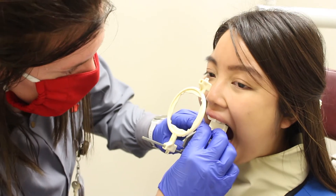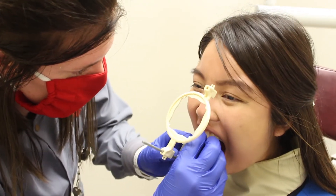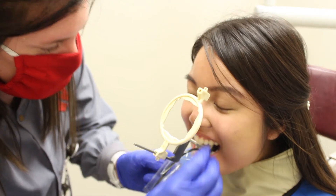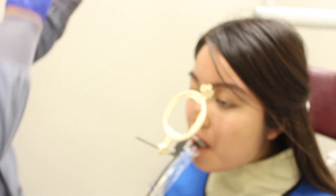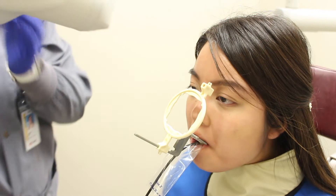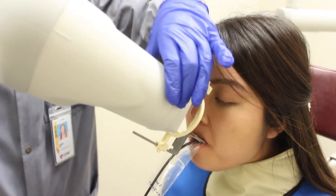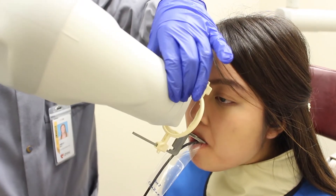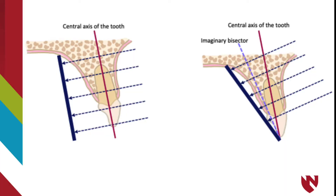When taking an anterior maxillary central periapical, or PA, place the sensor parallel to the central axis of the maxillary incisors and ask the patient to bite down firmly on the bite block. Then place the PID to the center of the aiming ring to ensure that it is parallel to the indicator arm. This is called paralleling technique, which means the central axis of the root of the tooth is parallel to the placed sensor.